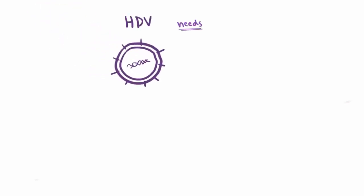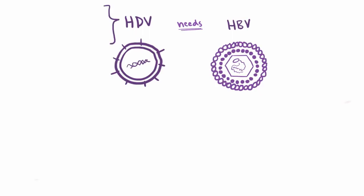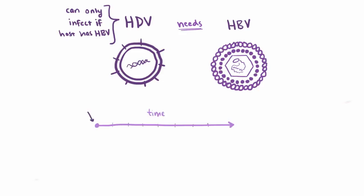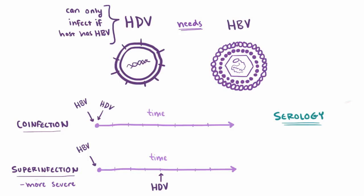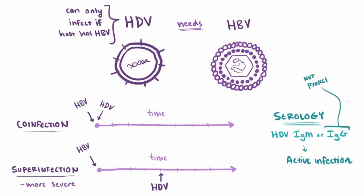Hepatitis D virus is unique in that it needs HBV — it can only infect a host that also has HBV. If it infects at the same time as HBV, it's called co-infection. If it infects sometime later, it's called super-infection, which is considered more severe than co-infection. If either the IgM or IgG antibody for HDV are present, that indicates an active infection — so in this case, IgG is not a protective antibody.